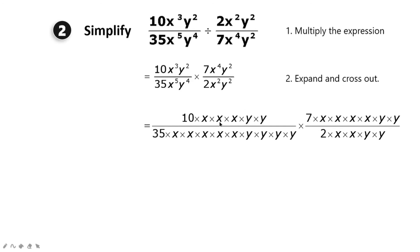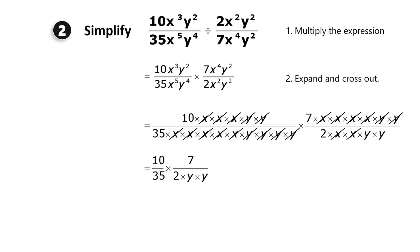Now we cross out like terms. Cancelling all the x's and y's, we're left with 10/35 times 7/2 times y·y. Simplifying the numbers: 2 into 2 is 1 and 2 into 10 is 5; 7 into 7 is 1 and 7 into 35 is 5. The two 5s cancel, leaving the final answer 1/y².